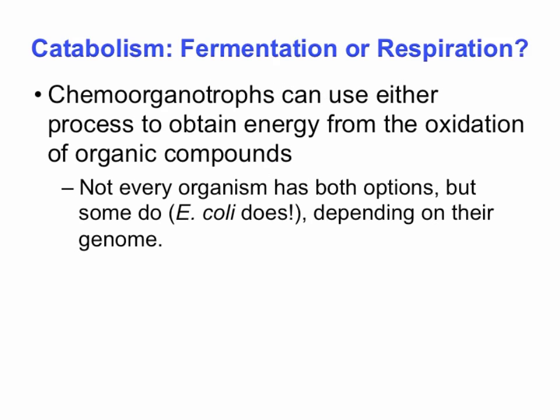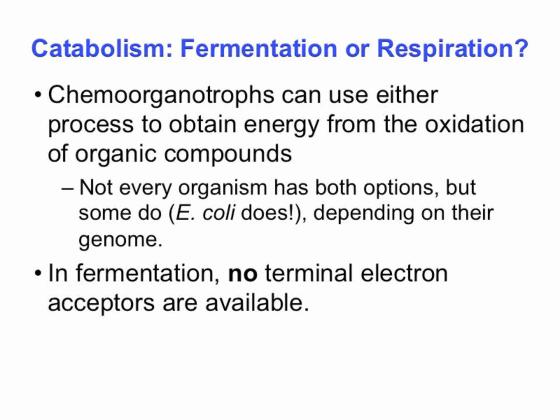When we look at catabolism, microorganisms have two choices: they could ferment or they could respire, and that's going to depend on multiple issues. One of them is going to be their genetics, and the other is going to be the conditions in which they are. So a chemoorganotroph can use either process. Think about E. coli — it can ferment if living in the absence of oxygen, but it can respire if oxygen is present. Not all microorganisms have both options; some are exclusively respiratory, others exclusively fermentative. So it depends on their genome.